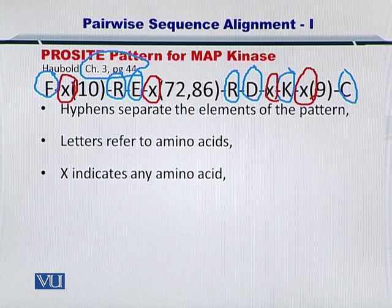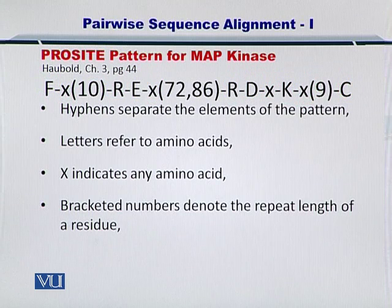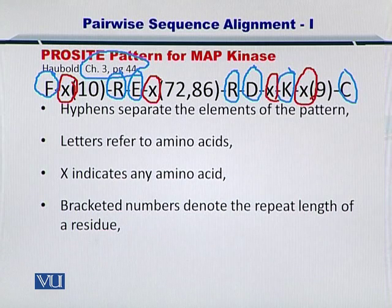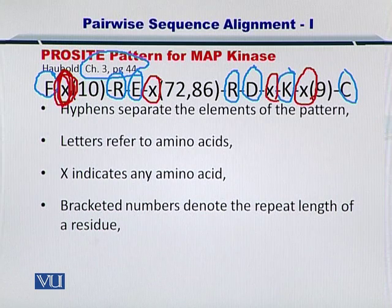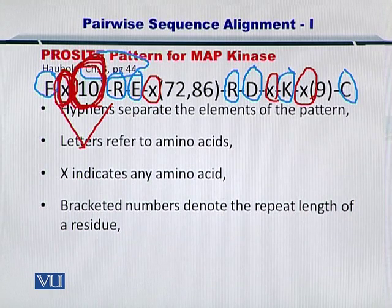I've circled all X's for you. Next, the bracketed numbers denote the repeat length of a residue. For instance, here you had an X, so you can have any amino acid here and it should be repeated 10 times. So there are 10 amino acids between F and R.